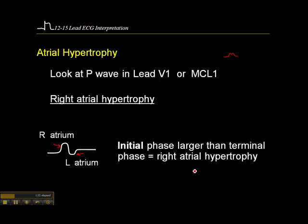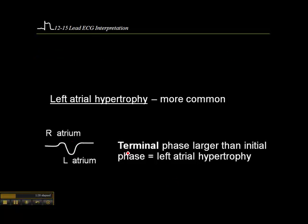Is it important to distinguish between right and left atrial hypertrophy? Not really, but just for your interest's sake. Left atrial hypertrophy is more common — in this case the terminal phase of the biphasic P wave is larger than the initial phase, which is indicative of left atrial hypertrophy.